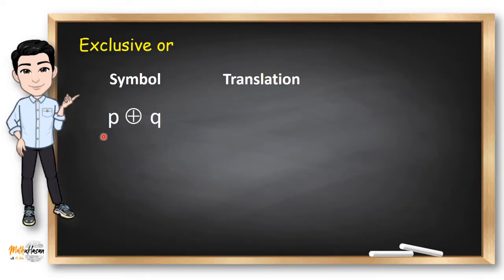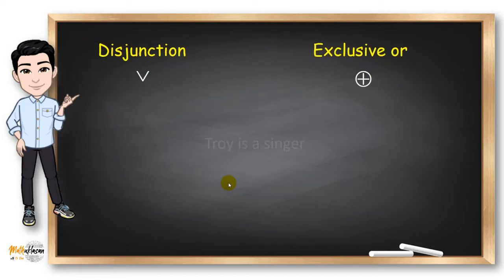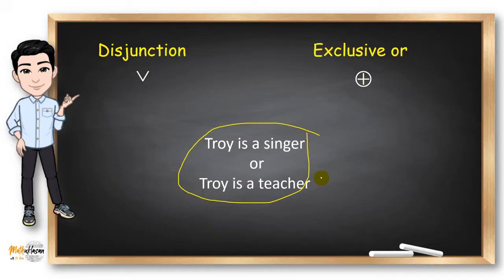Exclusive OR in symbol can be written like this and we can translate it as P or Q, P X or Q or P exclusive or Q. But wait, OR is also used for disjunction, right? So how do we know when to use disjunction or exclusive OR whenever we see this word in a sentence? Simple lang. Let's have this example. Troy is a singer or Troy is a teacher. So when to use OR and exclusive OR? This one is for disjunction. Why? Because Troy can be a singer and a teacher at the same time. We can have two professions at the same time, right? So it's disjunction.